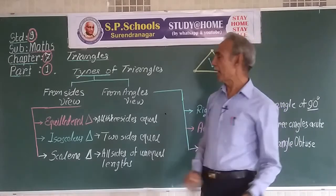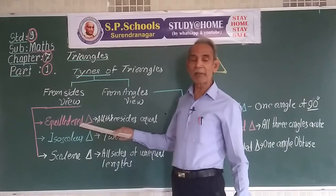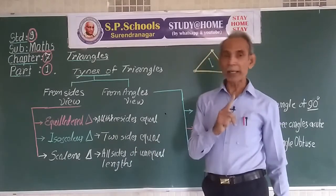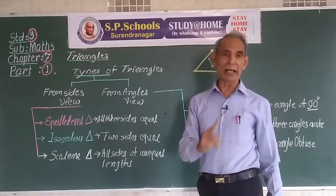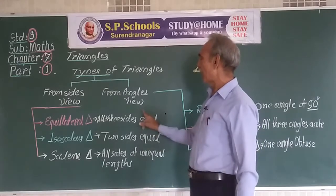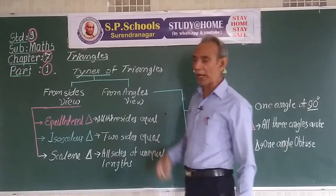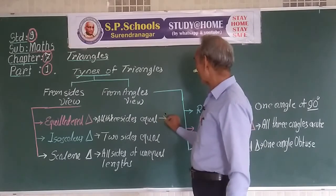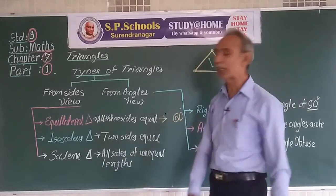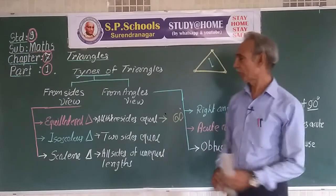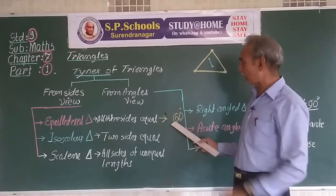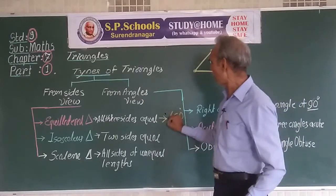In another way, for an equilateral triangle, if the sides are equal in length, all its angles will also be equal in measure. We know that all the angles add up to 180 degrees. So any one angle of an equilateral triangle will be one third of 180, that is 60 degrees. So all three angles of an equilateral triangle are equal, each having a 60-degree measure.